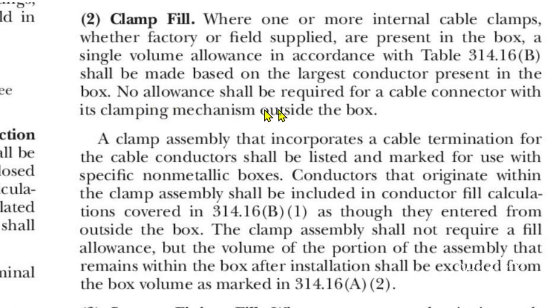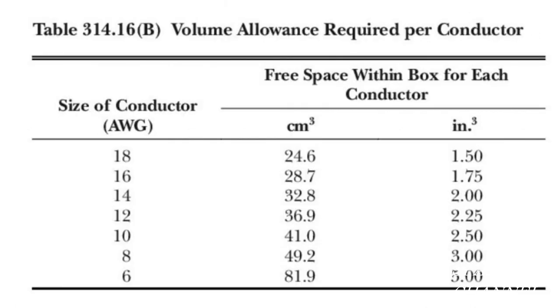No allowance shall be required for a cable connector with its clamping mechanism outside the box. Here's table 314.16B, volume allowance required per conductor. And you see where it says 12AWG conductor, which is what we had in our box example. You go over to the cubic inches area, it says 2.25. So that's our volume allowance required per conductor. And if you have a clamp that is an interior clamp, you have to add 2.25 to the total box volume fill.